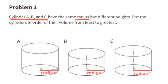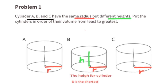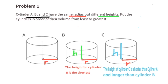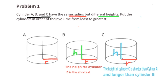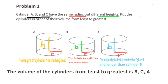Problem number 1. Cylinders A, B, and C have the same radius but different heights. Put the cylinders in order of their volume from least to greatest. Cylinder B has the shortest height, so it's going to have the least volume. Cylinder C has the next shortest height, so it would have the second most volume. Cylinder A is the tallest, so it's going to have the greatest volume. The volume from least to greatest is B, C, A.